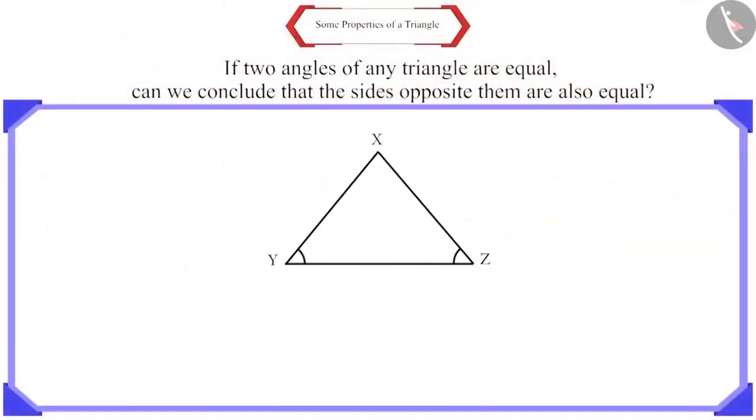Let's take a triangle XYZ, in which angle XYZ and angle XZY are equal. Now, we have to prove that the opposite sides are equal. Let's move ahead and prove this. Here, draw the bisector of angle YXZ and let it intersect YZ at O.